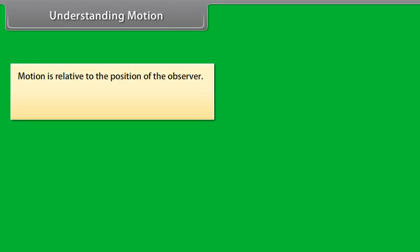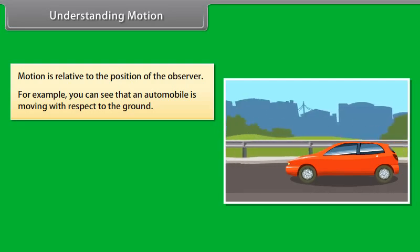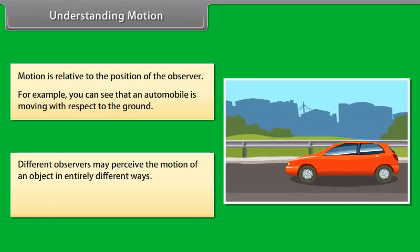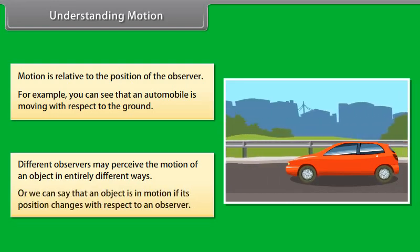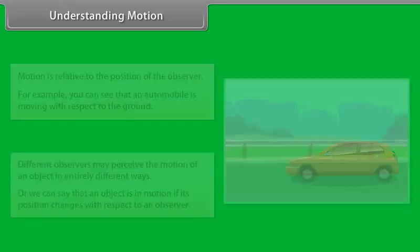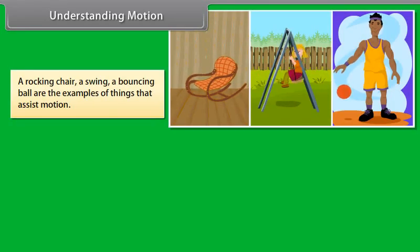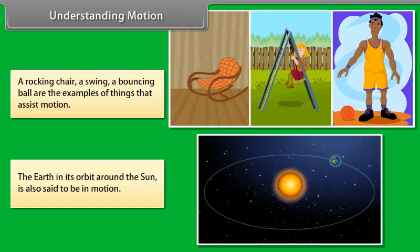Motion is relative to the position of the observer. For example, you can see that an automobile is moving with respect to the ground. Different observers may perceive the motion of an object in entirely different ways. An object is in motion if its position changes with respect to an observer. A rocking chair, a swing, and a bouncing ball are examples of things that exhibit motion. The earth in its orbit around the sun is also said to be in motion.